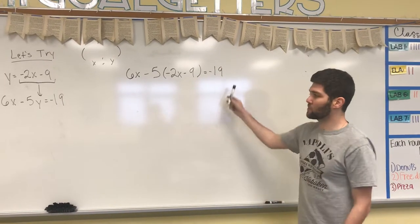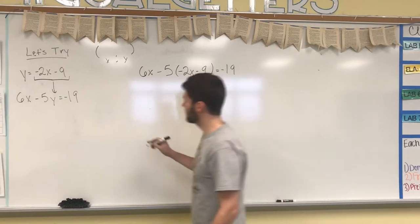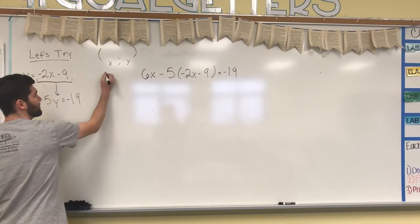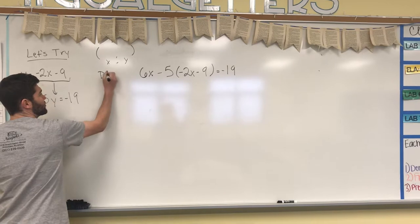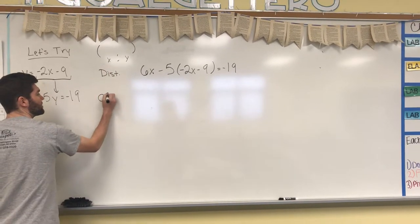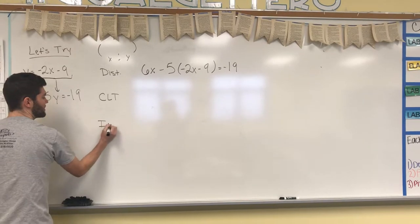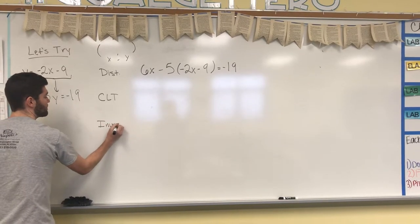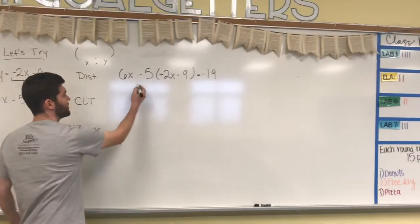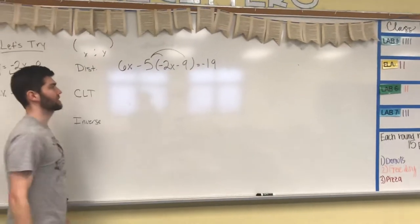Now this is a pretty long multi-step equation, but you guys did these a couple weeks ago. So if you're following some easy steps, the first step you would do would be distribute, then you would combine like terms, and then you would perform inverse operations.